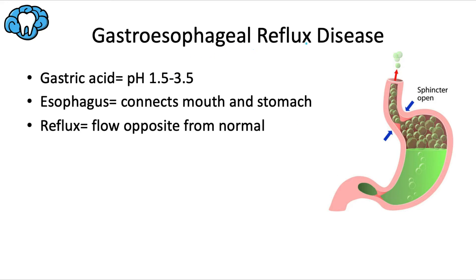Let's start by talking about gastroesophageal reflux disease, or acid reflux. Before we talk about the disease process, we have to talk about what normally happens. Your stomach naturally produces gastric acid, used to help digest food, and its pH is very low — somewhere between 1.5 to 3.5 — so that it can do its job effectively. Our stomach lining is designed to handle these acidic conditions, but not so much the rest of our bodies.